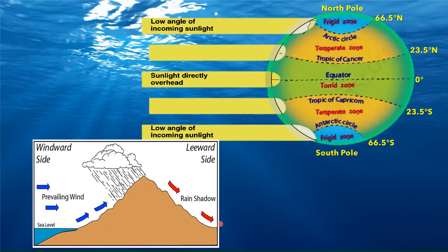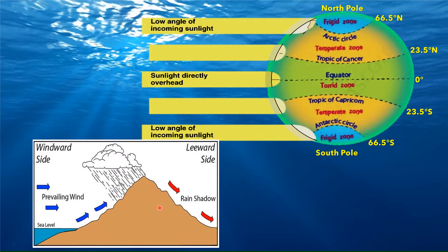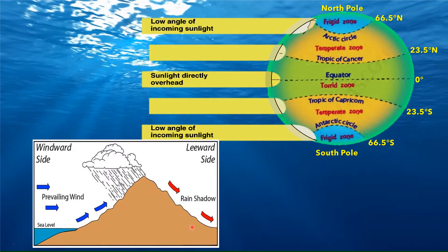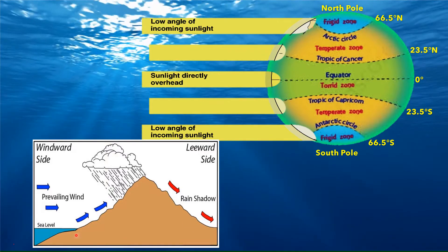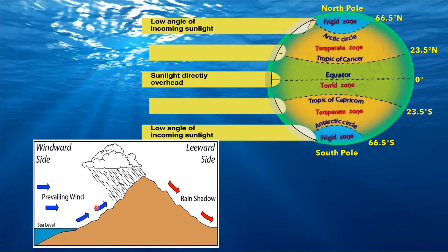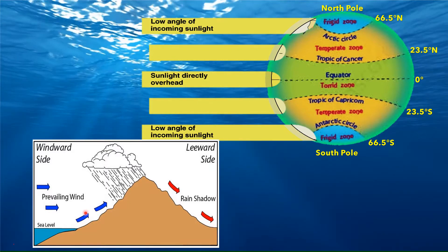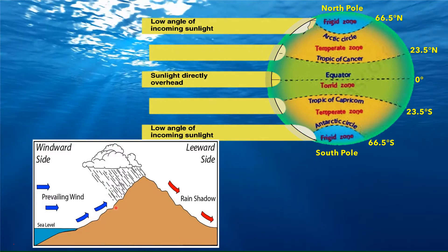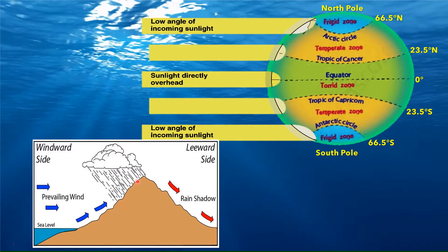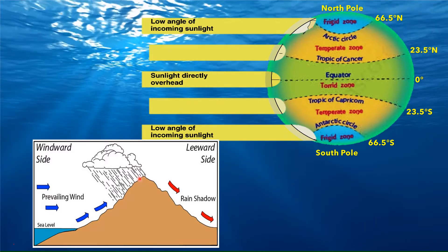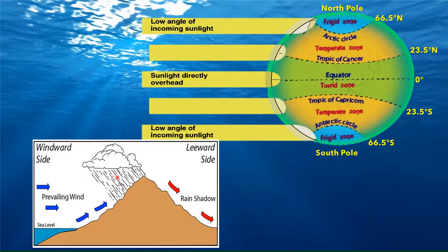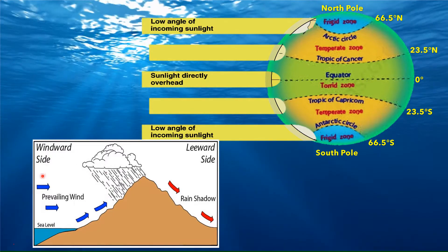Now we move on to the orographic type of rainfall. We already know that mountains act as an obstruction or relief feature. For example, these are the Western Ghats — the Sahyadri mountains — and these are the southwest monsoon winds. These winds are forced to rise up the mountain, and as the rising wind starts cooling, condensation takes place resulting in cloud formation. These clouds then bring heavy rainfall to the windward side of the mountain.